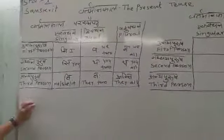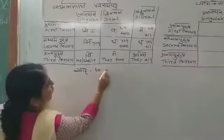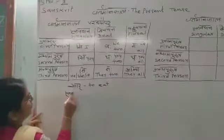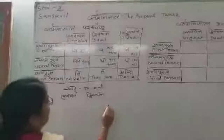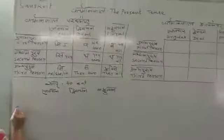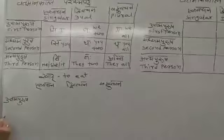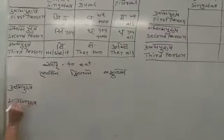So you have to remember: mi, vaha, maha; si, thaha, thaha; ti, thaha, anti. So I am writing 'khad'. Khad means to eat. Here also we will say Ek Vachan, Dvi Vachan, and Bahu Vachan — Uttama Purush (first person), Madhyama Purush (second person), and Anya Purush (third person).